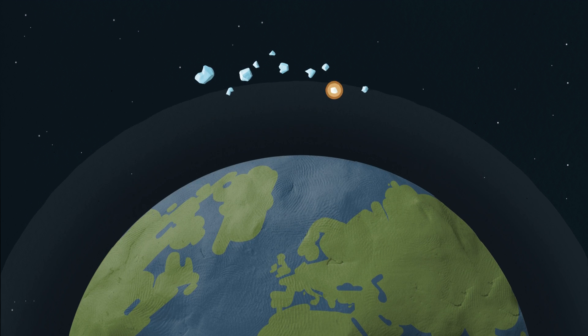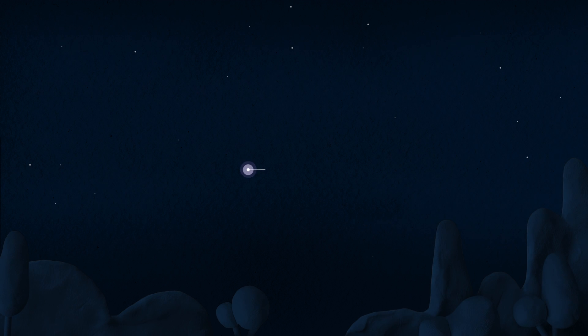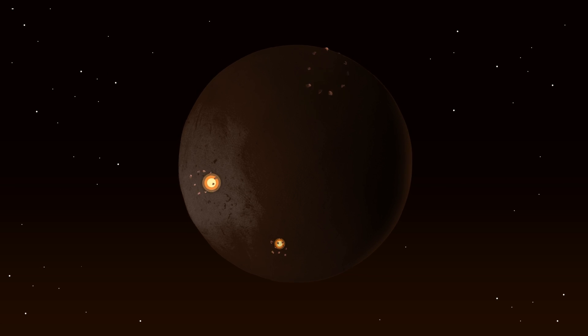At certain times of the year, the Earth plies through these trails and bits of comets flare up as they fly through our sky and become meteors. The early Earth was hit by thousands of comets and asteroids.